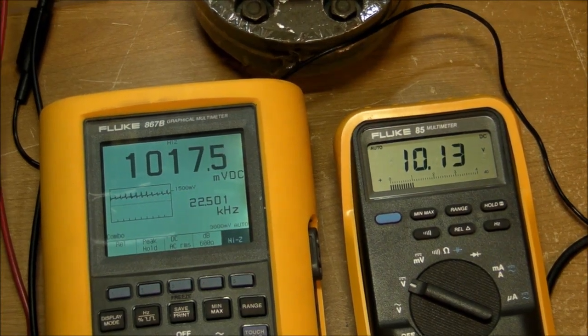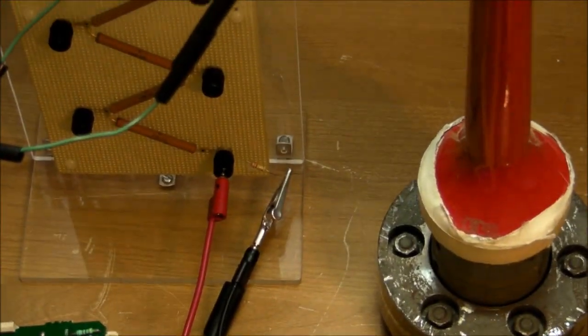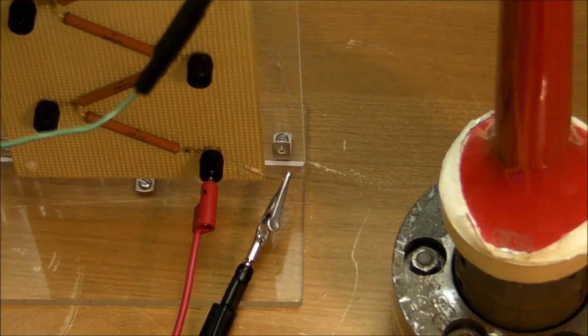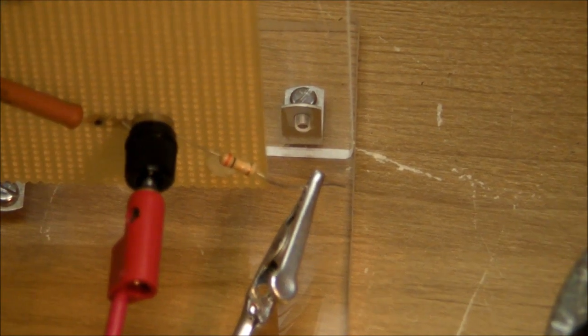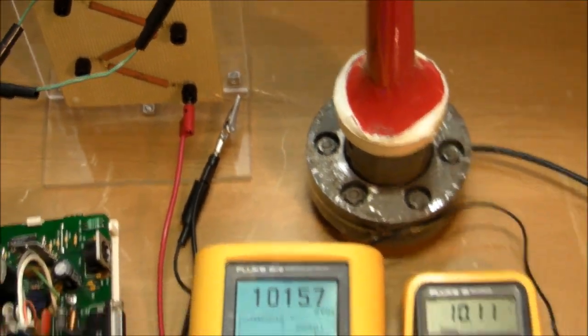Look at that. And again, that difference could be attributed to the fact that I'm using an ordinary five percent tolerance carbon film resistor down there. This is just a rough introduction to this thing's capability.